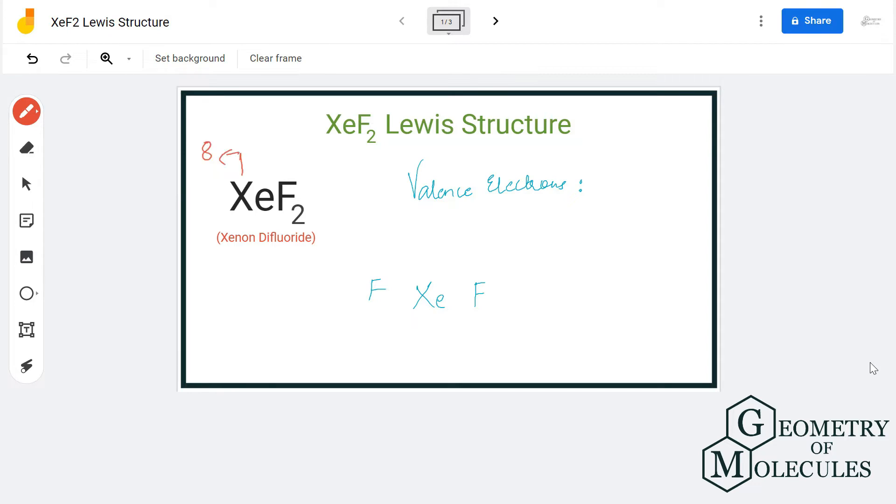Xenon has 8 valence electrons, and fluorine has 7 valence electrons. But as there are two atoms of fluorine, we will multiply this number by 2, which gives us a total of 22 valence electrons for XeF₂.